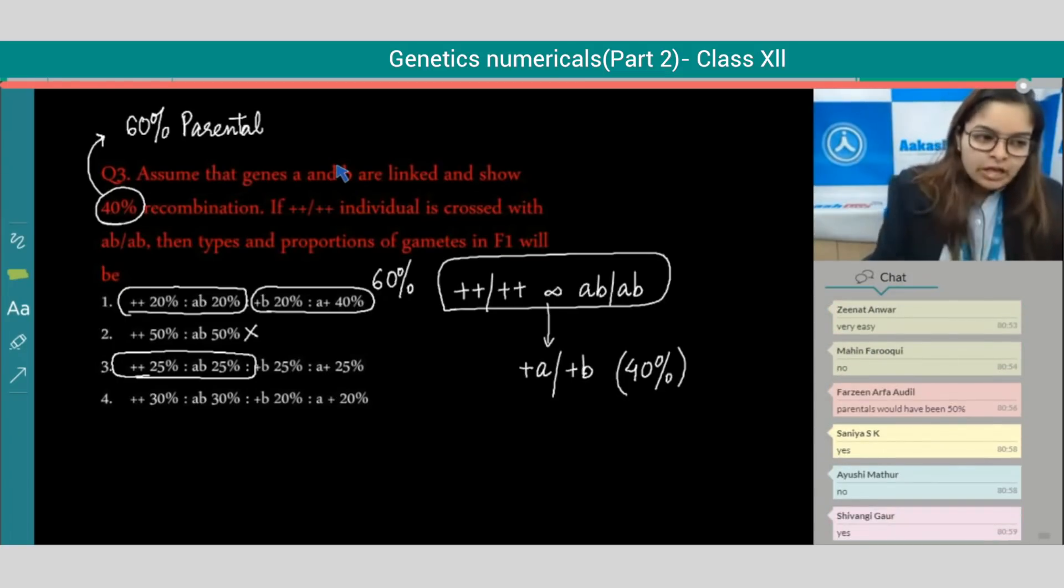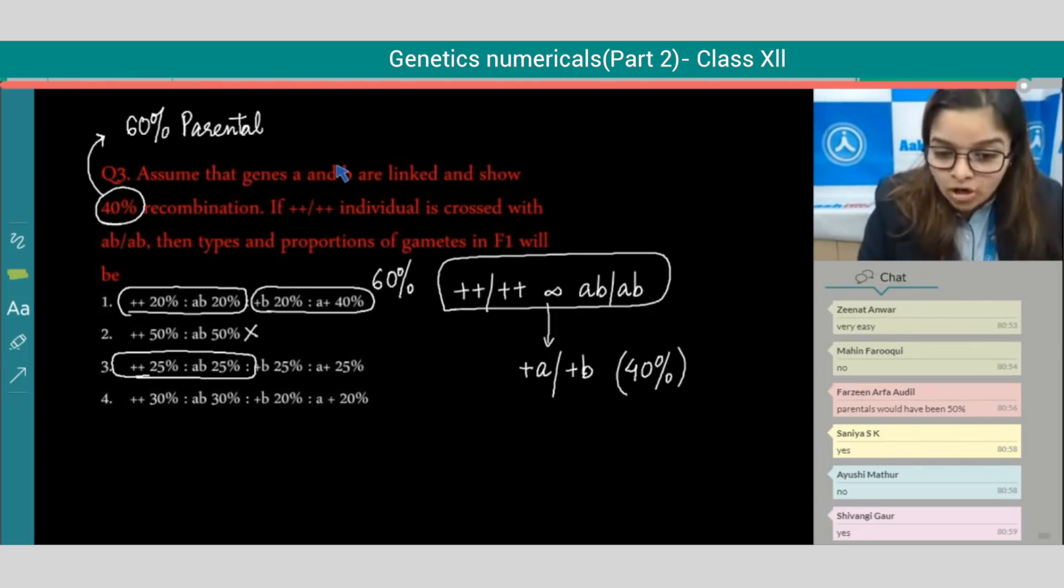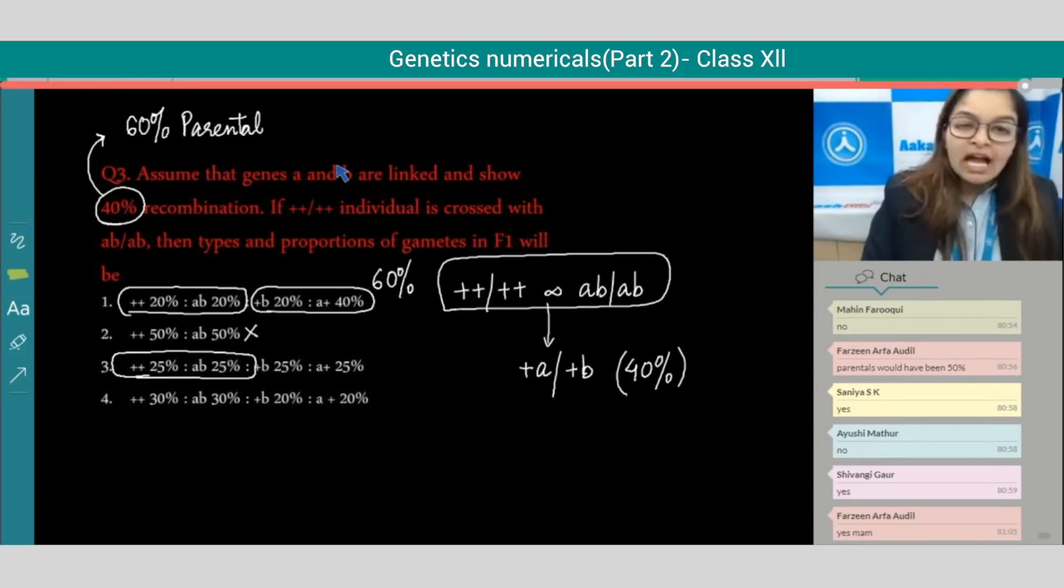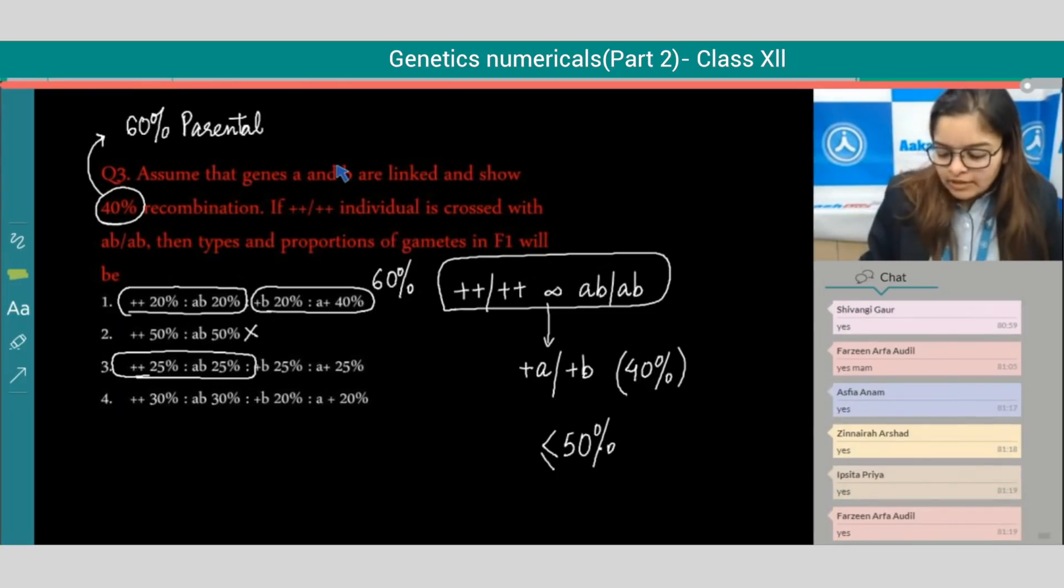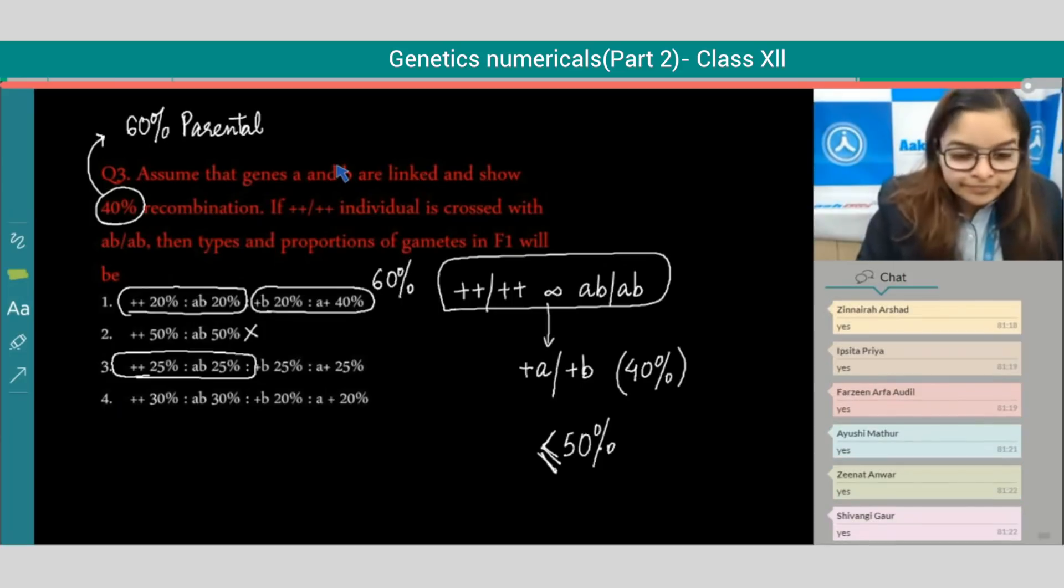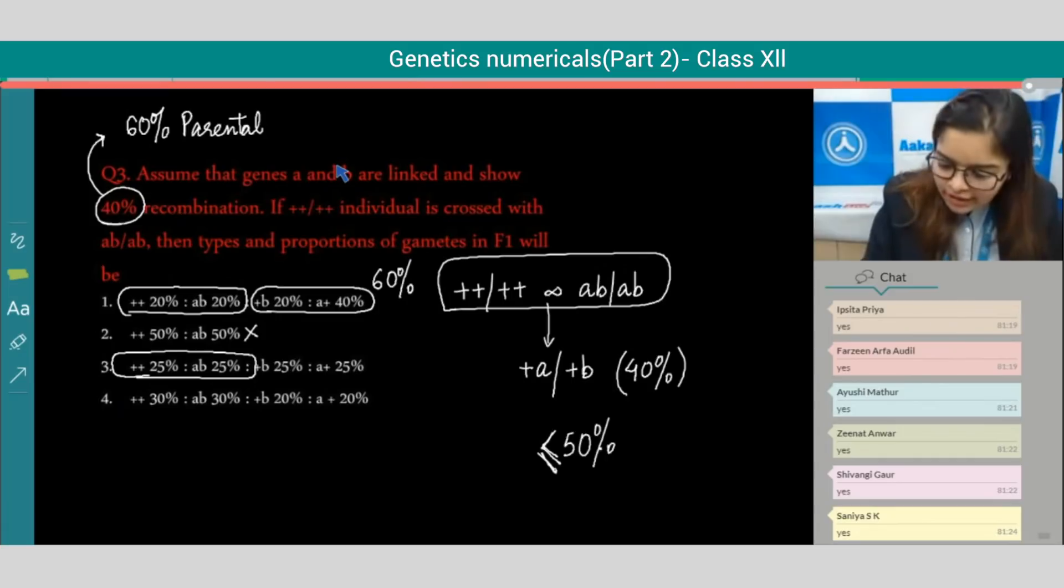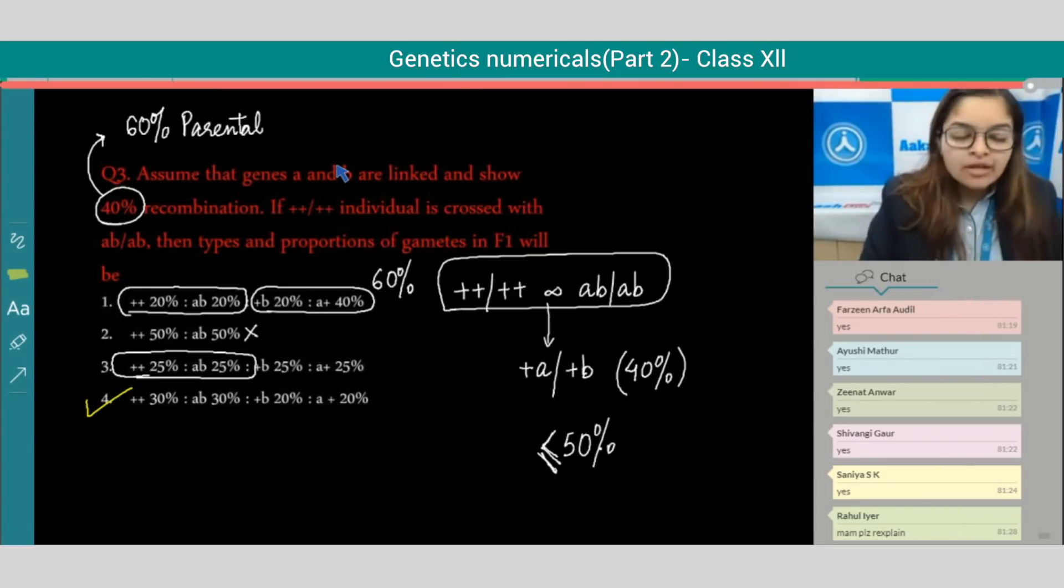As per the information given in the question, if 40 percent recombination - exactly what we have studied - recombinants cannot be more than 50 percent. For recombinant, the value will be less than or equal to 50 percent. So option four will be right. No need to make a cross, just read out the question carefully, you will get the answer.